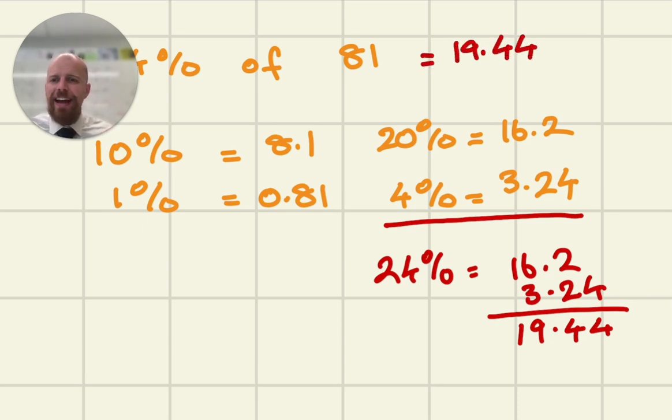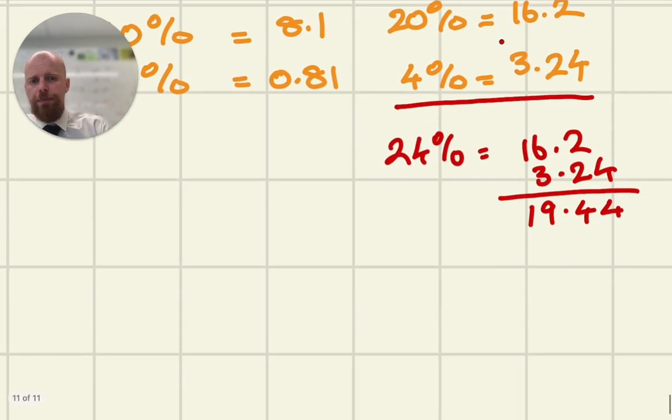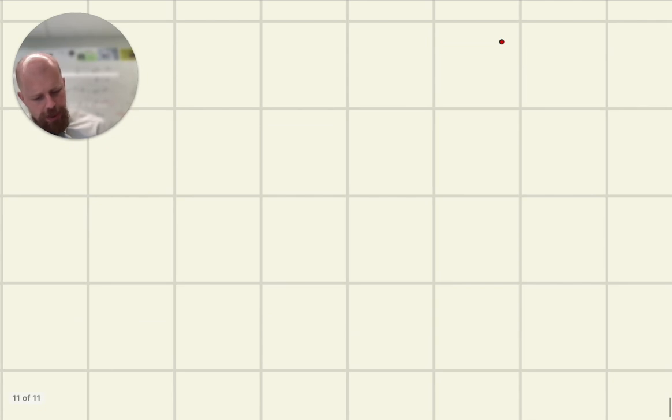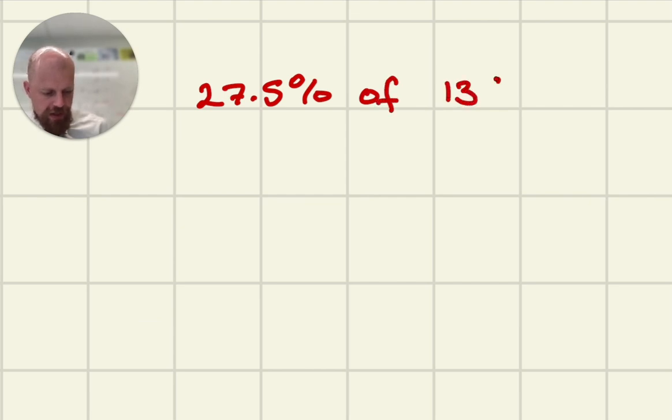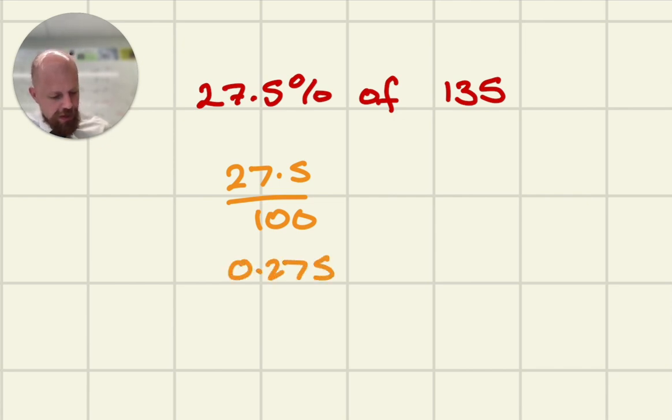Now, if you have a calculator, it's even easier. So let's say I wanted to find 27.5% of 135. What I can do is I can do 27.5 divided by 100 or convert it straight to a decimal. It's the same thing. 0.275 times 135. So I get my calculator, and I type in 0.275 times 135, and that gives me 37.125.